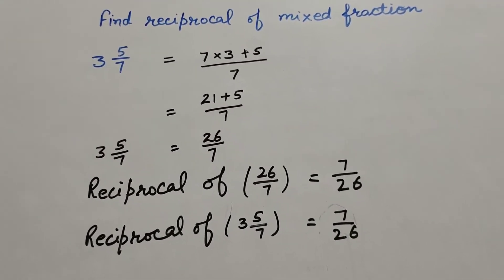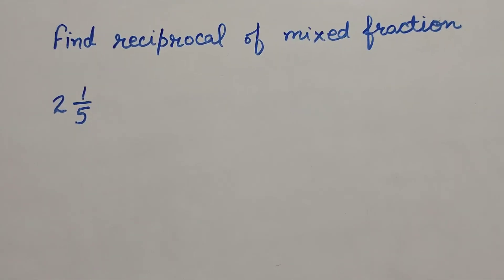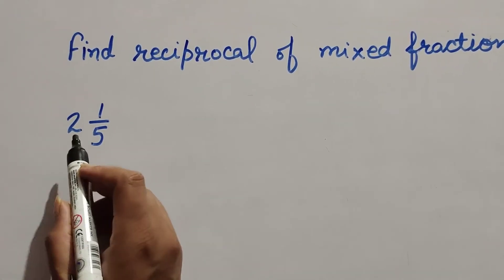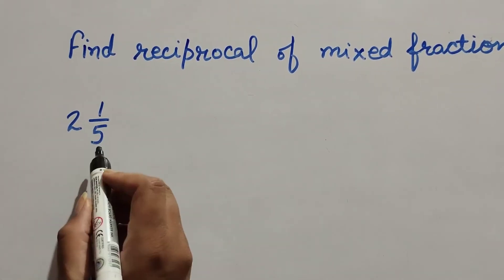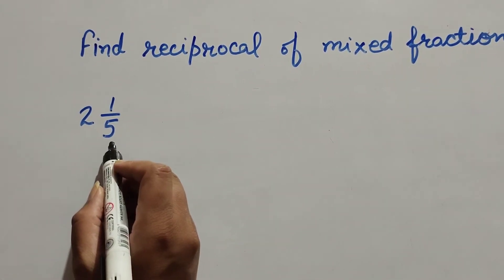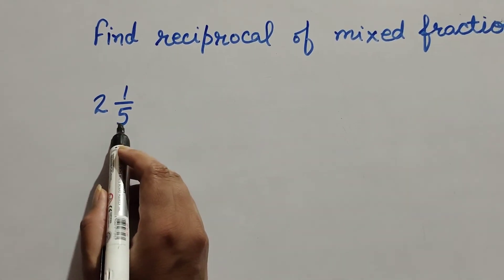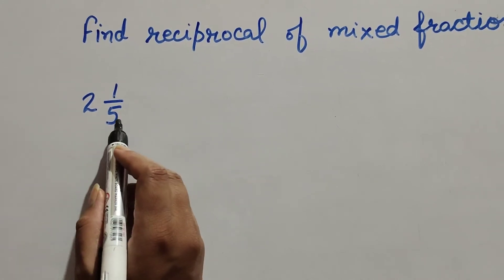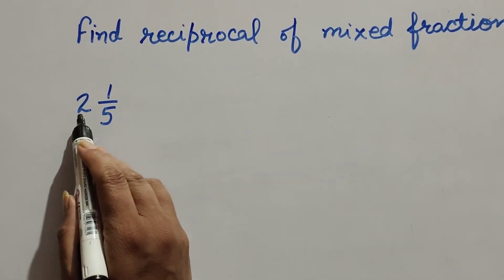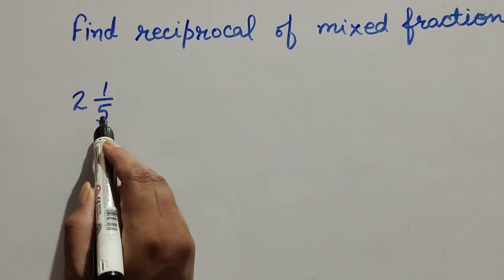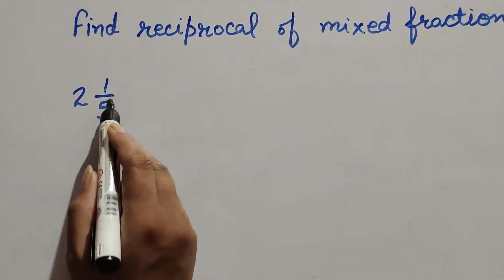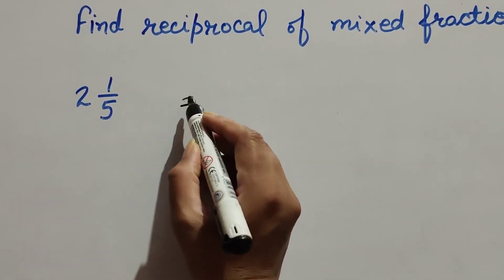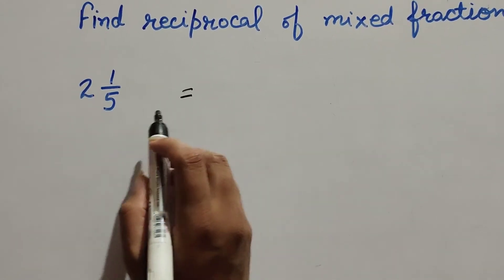Now we take one more example. The mixed fraction is 2 and 1/5. We need to find the reciprocal of this mixed fraction. Here 2 is the whole number and 1/5 is the fraction. First we simplify this mixed fraction.